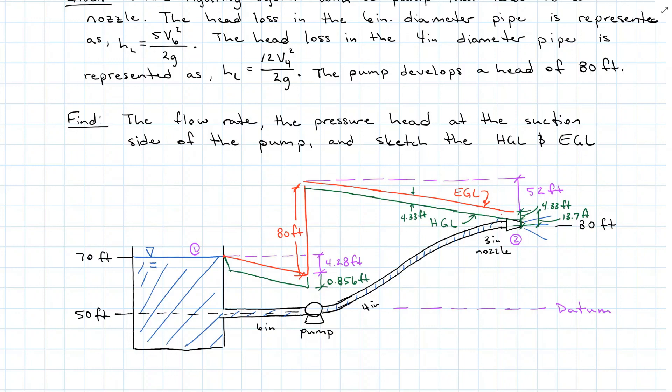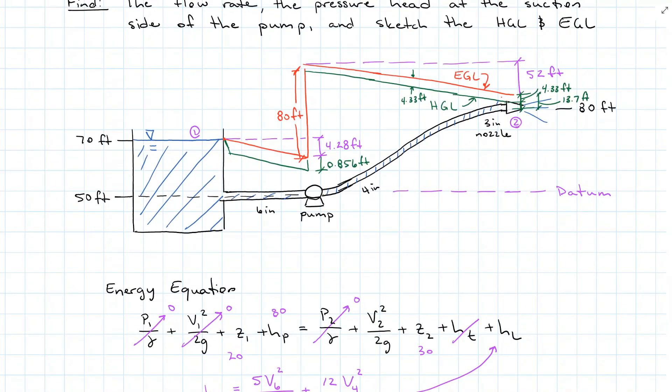We have our flow rate. So the very last thing we want is the pressure head at the suction side of the pump. So the pressure head is going to be this value right here before we get into the pump. So that's going to be the difference in height from the water elevation to the pump elevation. So we've got 20 feet there. And then we need to subtract that head loss of the 6 inch pipe, 4.28 feet. And then we also subtract the velocity head of 0.856 feet. And that gives us a pump head of 14.86 feet.